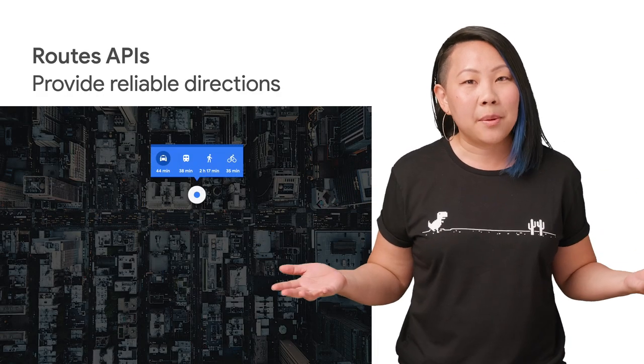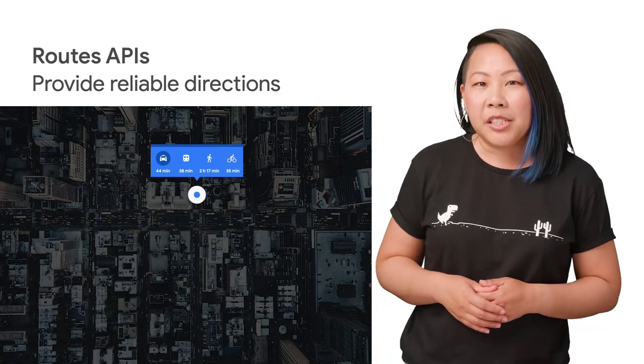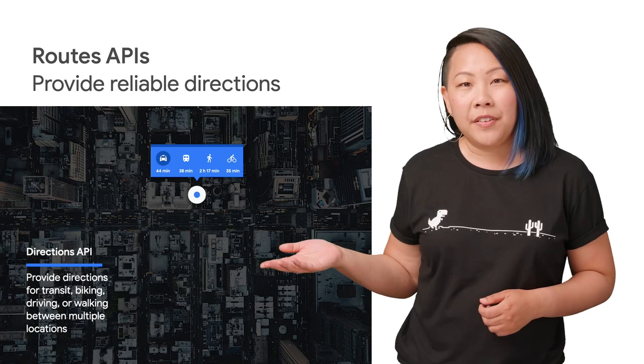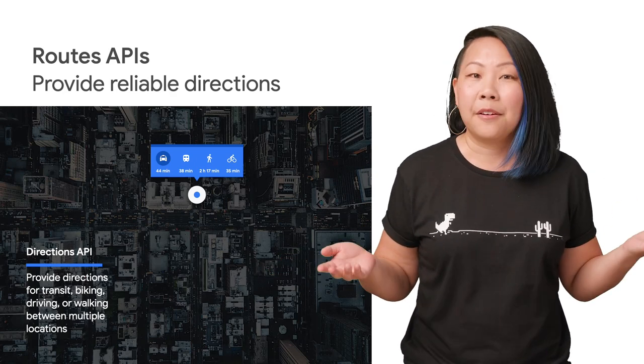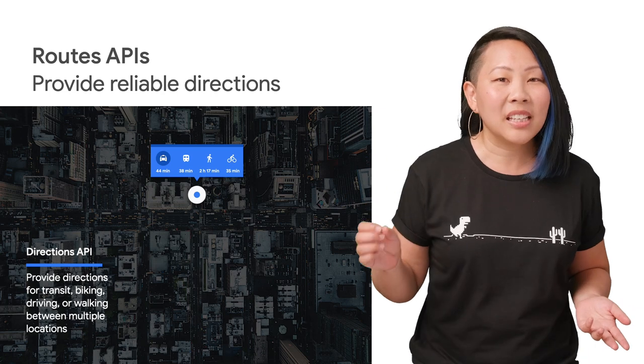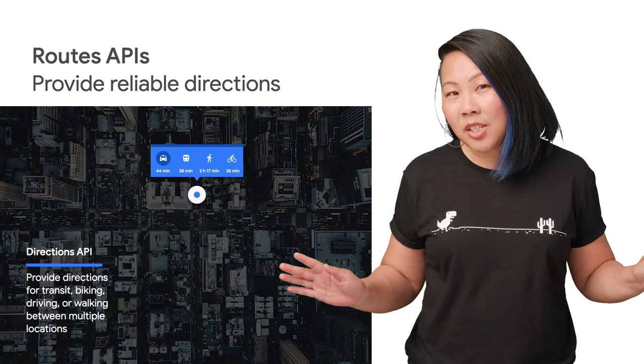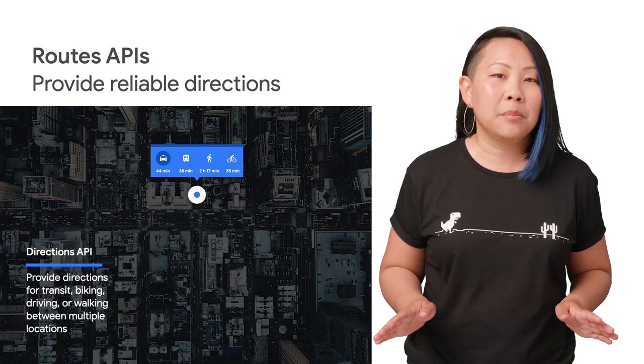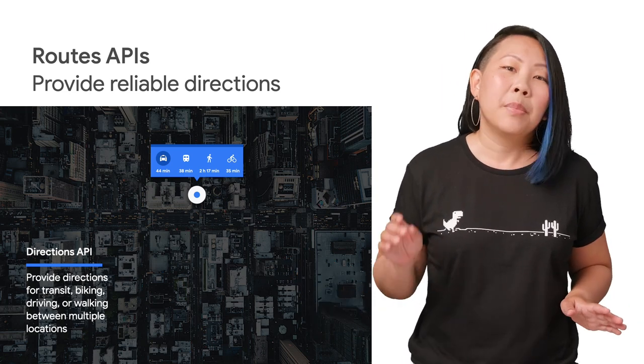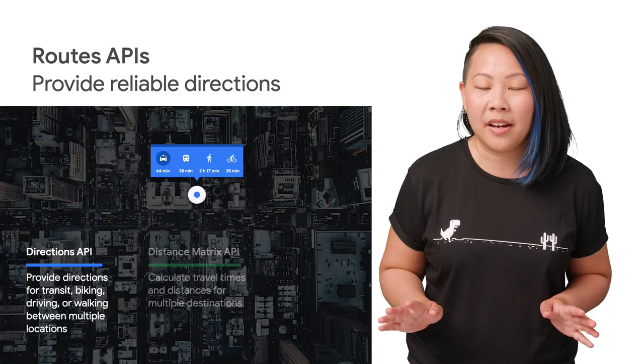Finally, we have the Routes APIs. Directions API provides directions for driving, biking, or walking, and for public transit in more than 3.8 million stations and 20,000 towns and cities. Not only do you get the same directions that are trusted by users of the Google Maps app, but you also get travel times and live traffic data. You can probably guess what the Directions API looks like, where you provide an origin, up to 25 optional waypoints, a destination, and your API key. Now let's take a look at the Distance Matrix API.